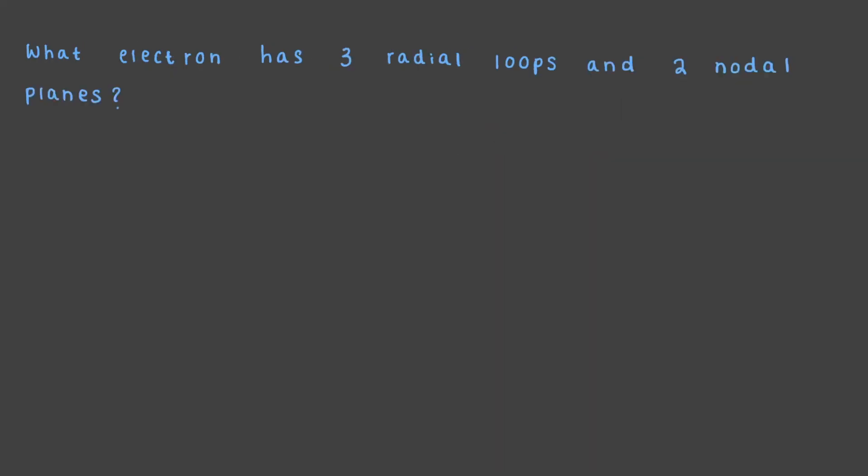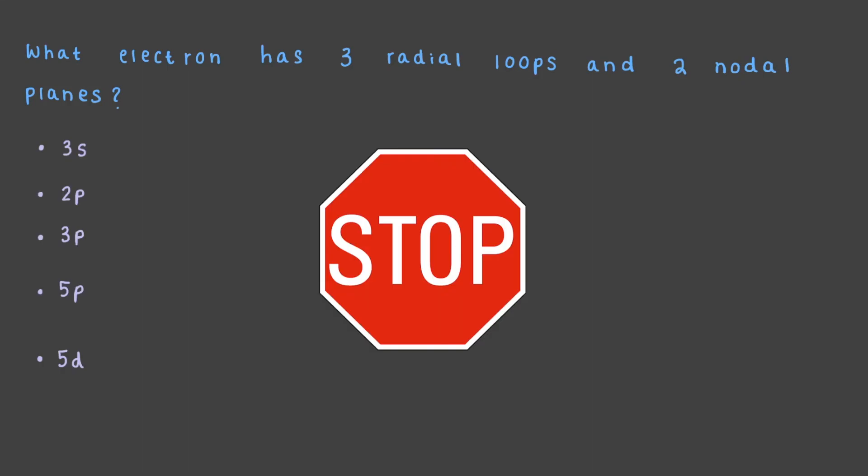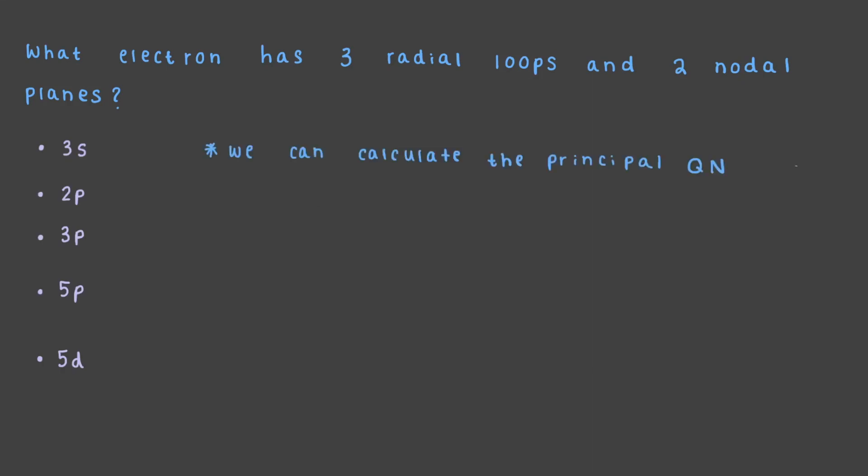What electron has three radial loops and two nodal planes? Remember that we can calculate the principal quantum number by adding the total number of loops. There are three radial loops and two angular loops, so n is equal to 5.